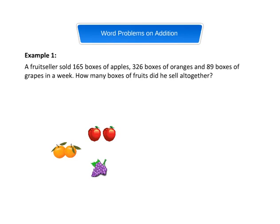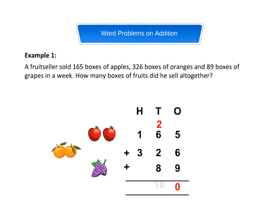Solution. Here we shall add boxes of all types of fruits sold. First, we will arrange the numbers in columns and then add. Do not forget to regroup. So, the total number of boxes sold are 580.